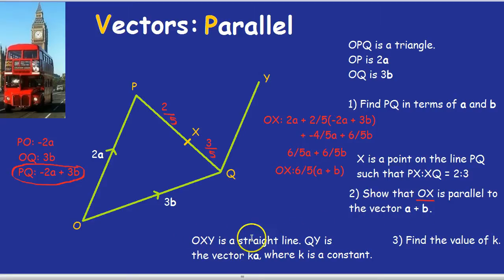Finally, what about this third bit? OXY is a straight line. QY is the vector K times a, where K is a constant. Find the value of K. To find the value of K, we need to realise that if OXY is a straight line, that means again that it's parallel. Parallel doesn't just have to mean two separate lines. Everyone knows that these two lines, if I drew them, are parallel. But you can be parallel and just be the same straight line. So this line, and if I've done it correctly, this line, these are also parallel. They're part of the same straight line if you joined it up.